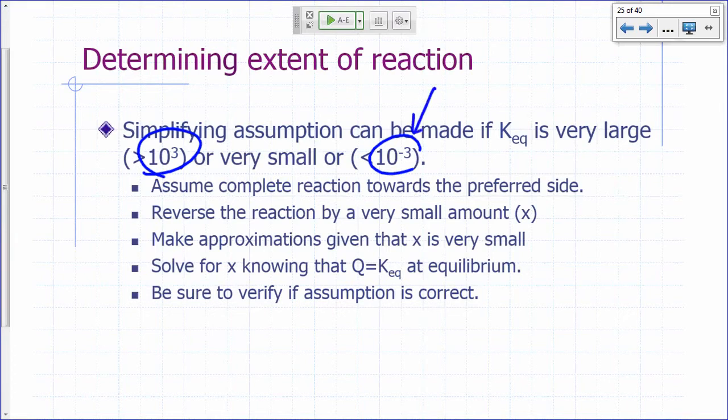What happens if Keq is very small? Then reactants are favored at equilibrium. So remember, a large Keq favors the product, a very small Keq favors reactants. So you can assume you have complete reaction towards the preferred side, the product side or the reactant side, depending on whether your Keq is very large or very small.